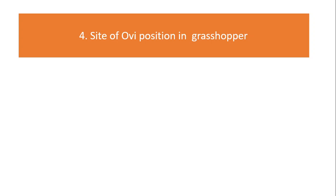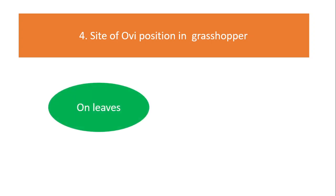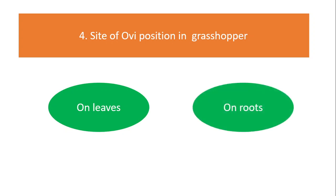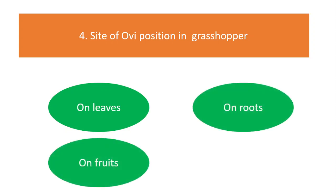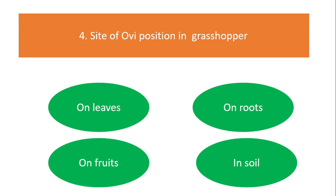Site of oviposition in grasshopper: on leaves, on roots, on fruits, or in soil? The answer is in soil.